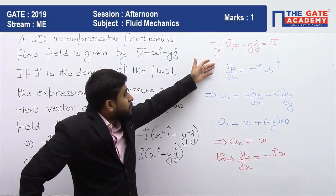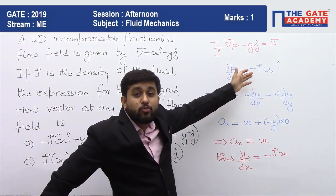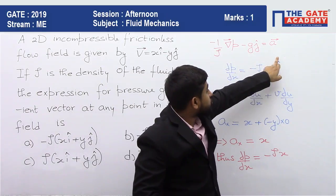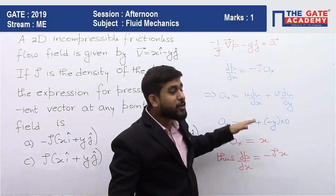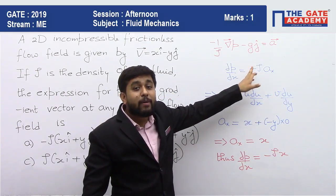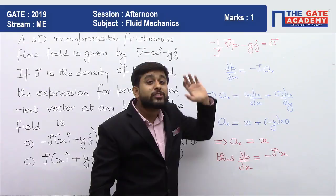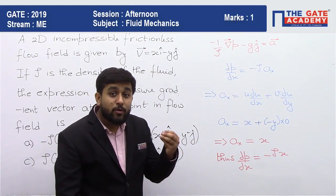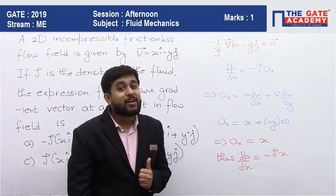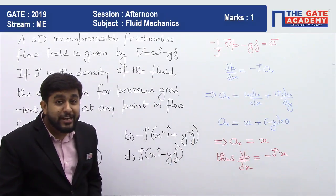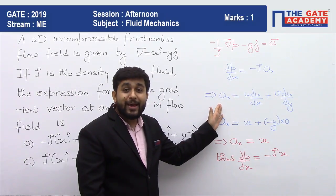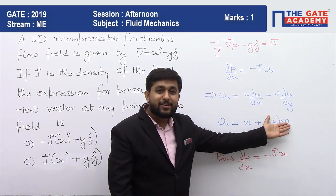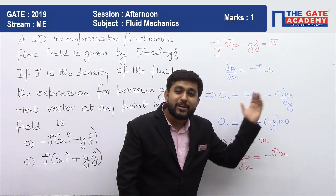Now from this equation, del P by del x will become equal to minus rho. So I am sorry, this is already a scalar component. Del P by del x is equal to minus rho into acceleration along the x direction. So if you know, Ax that will be equal to local acceleration plus convective acceleration, but the flow is already steady. So your total acceleration will be only convective acceleration. u del u by del x plus v del u by del y.